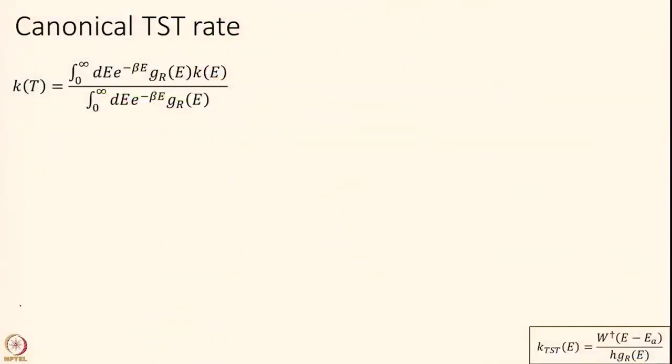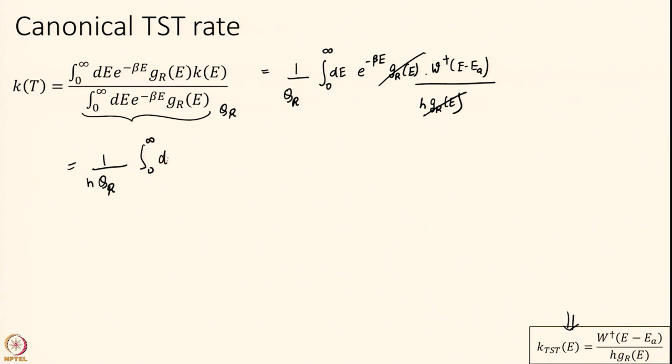K of t, I have to find this formula and I have shown that this thing is equal to nothing but Q_R. That is good. So I get 1 over Q_R, G_R of E, K of E. Now K of E I will use this formula what we had derived in the last lecture. This cancels here, so that makes me happy.